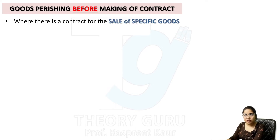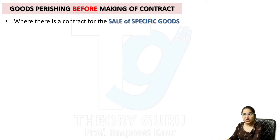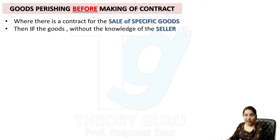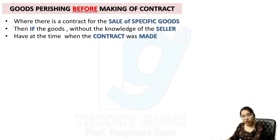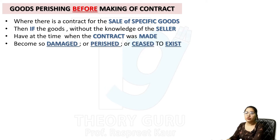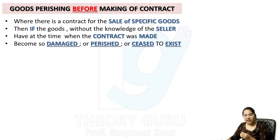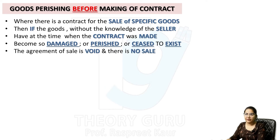जहाँ पे goods specific goods होंगी — specific goods का मतलब नहीं पता तो previous video पहले देखें। Where there is a contract for the sale of specific goods, if the goods, without the knowledge of the seller, at the time when the contract was made, have either been damaged, perished, or ceased to exist — seller को नहीं पता कि वो good damage हो चुकी है, perish हो चुकी है, या exist ही नहीं करती — तो वो agreement क्या हो जाएगी?